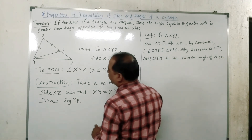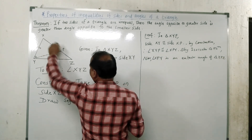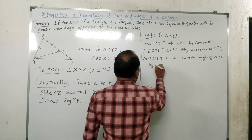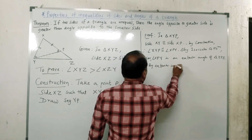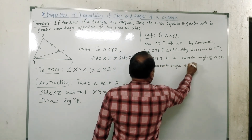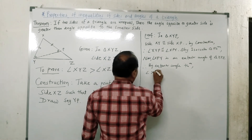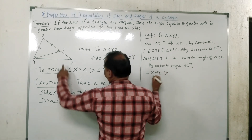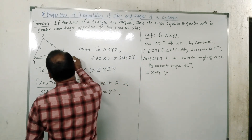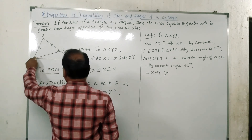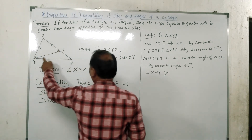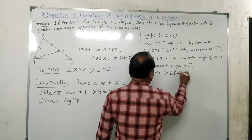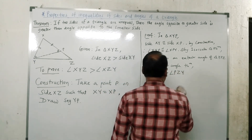Now, angle XPY is the exterior angle of triangle YPZ. Therefore, by the exterior angle theorem, angle XPY is greater than one of its remote interior angles. So angle XPY is greater than angle PZY, by the exterior angle theorem.